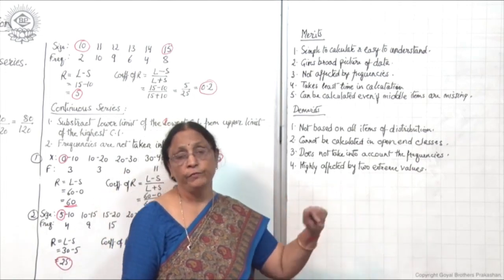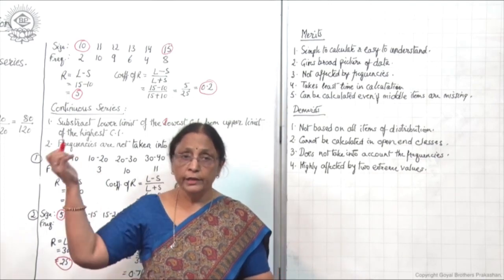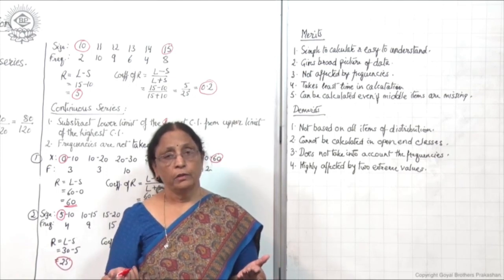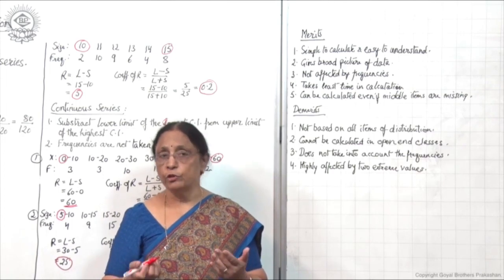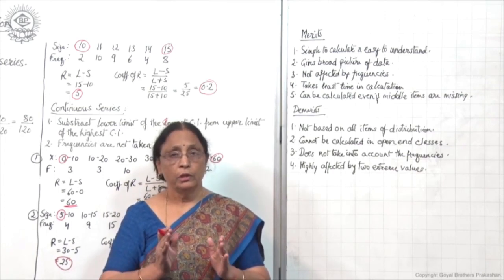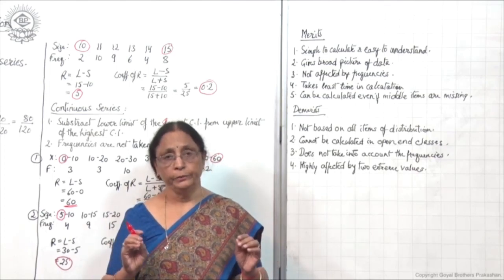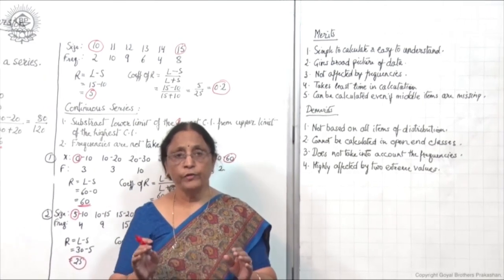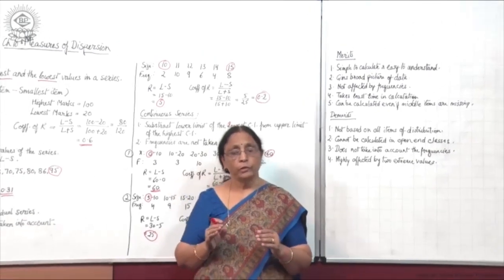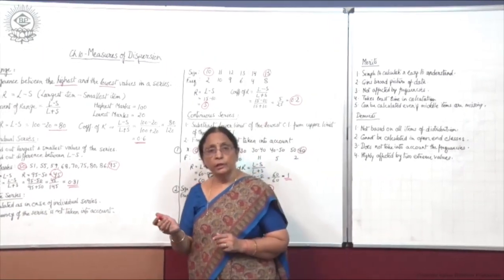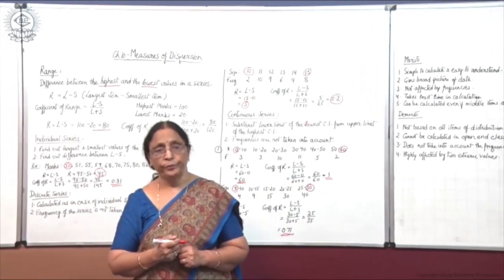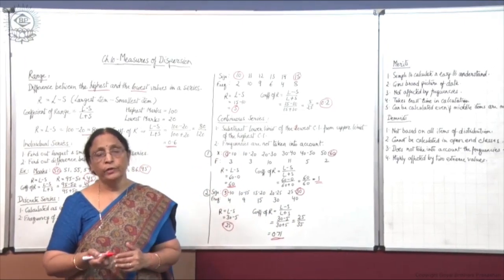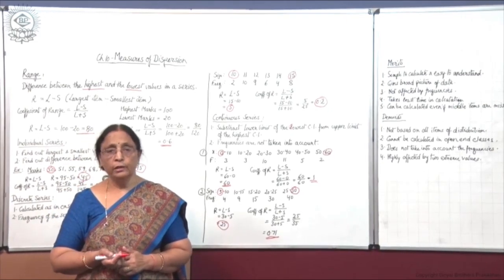Fourth, range is highly affected by two extreme values. Since we only take the highest and lowest, it is not a very accurate measure of dispersion — it just gives a broad picture. Despite its demerits, range is considered an appropriate measure for a simple view of the extent of a series. Next, we will move to the second measure of dispersion: quartile deviation.